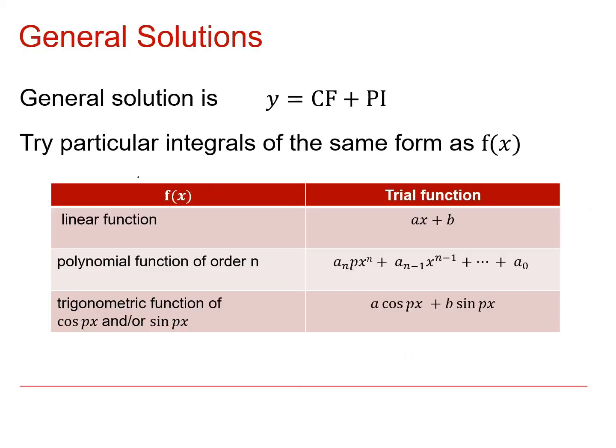So we're starting to collect together some of the trial functions we can use for different types of right-hand function. And we've seen linear and we've seen polynomial and now we've seen trig functions. And whether it involves just cos px or cos px and sine px, we would always use both of them. So we'd always include both a cos px and b sine px in our trial function for the particular integral.